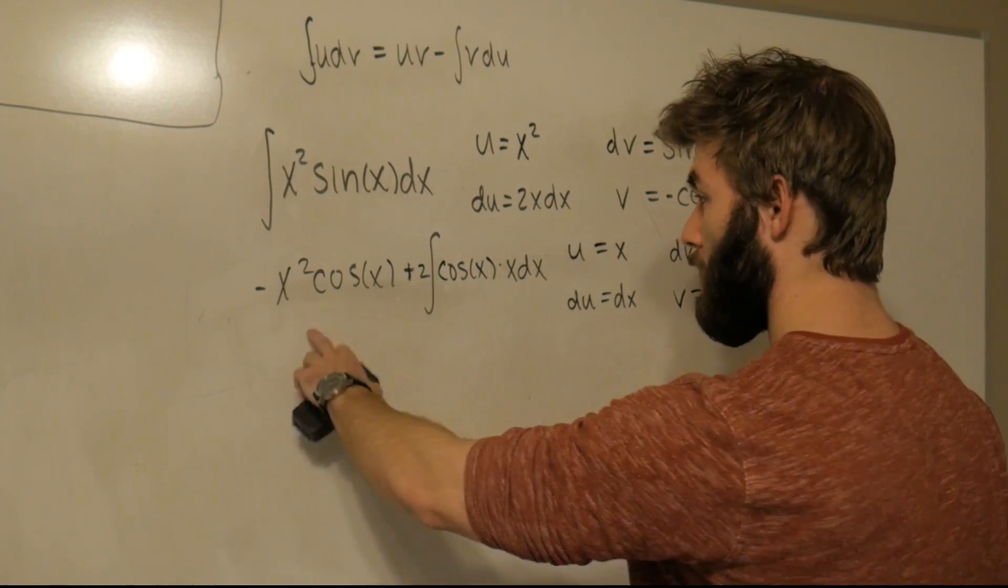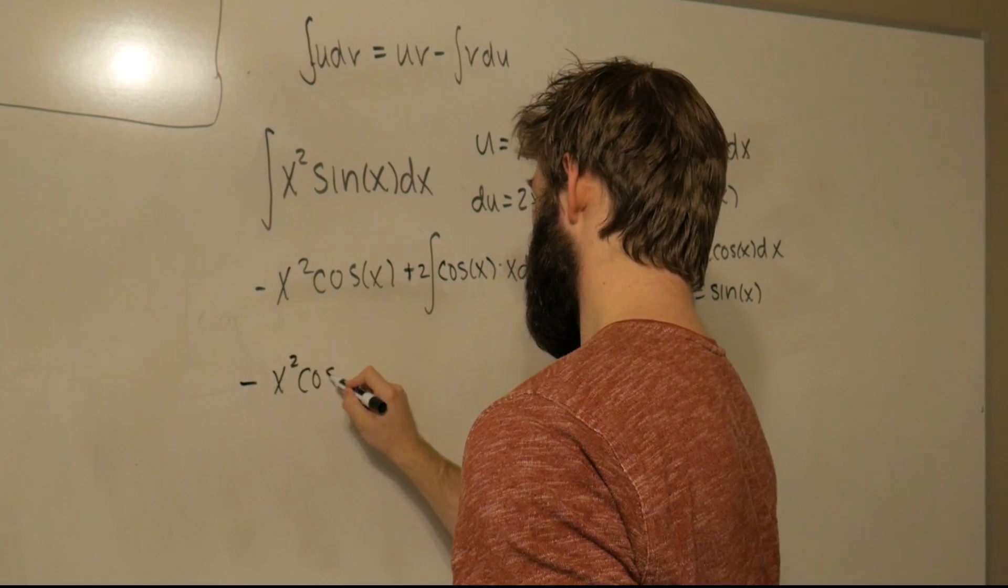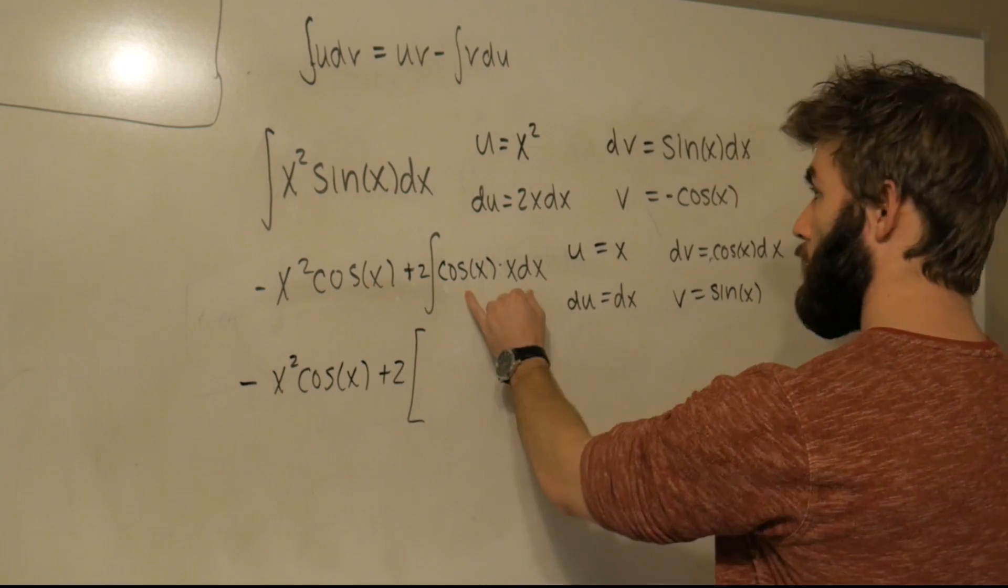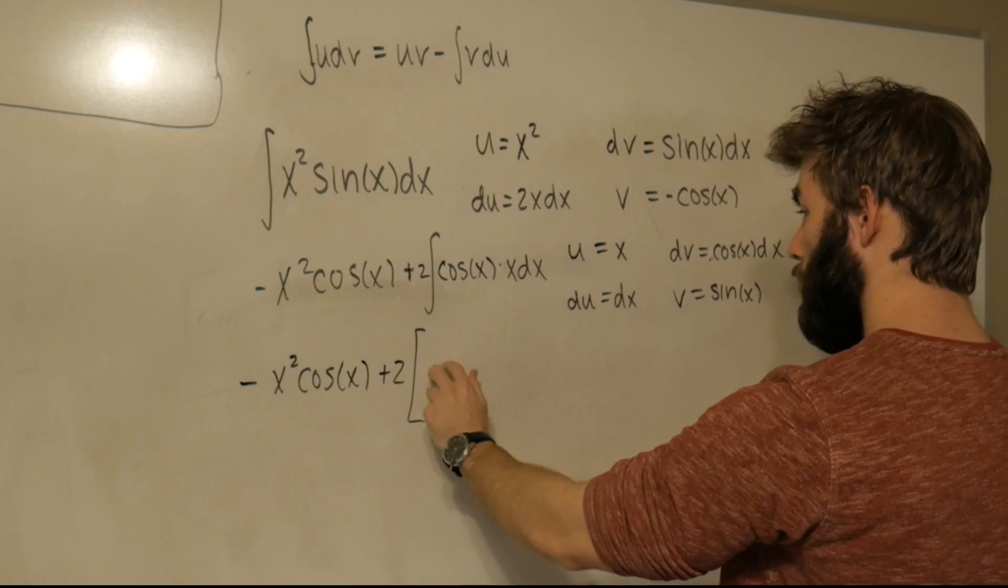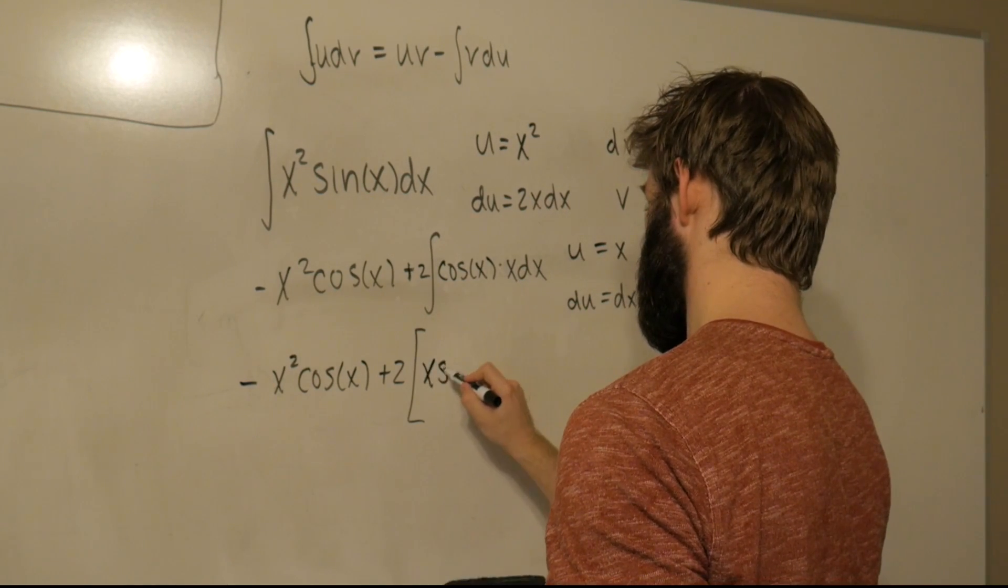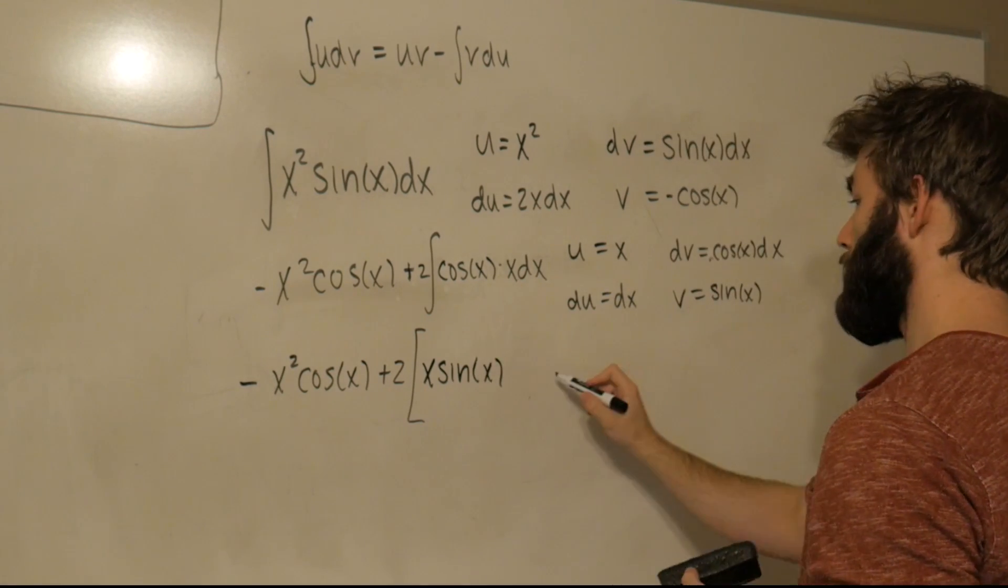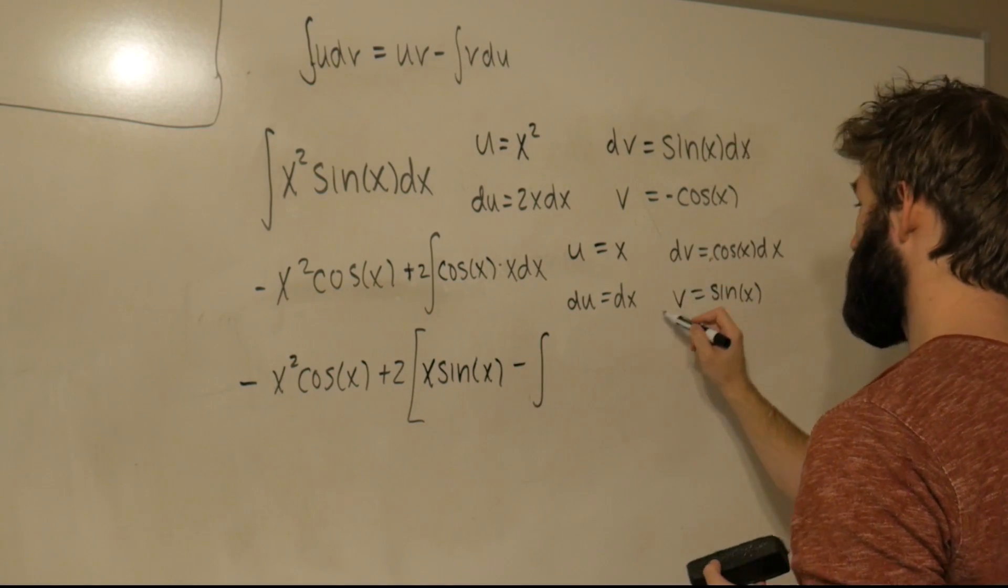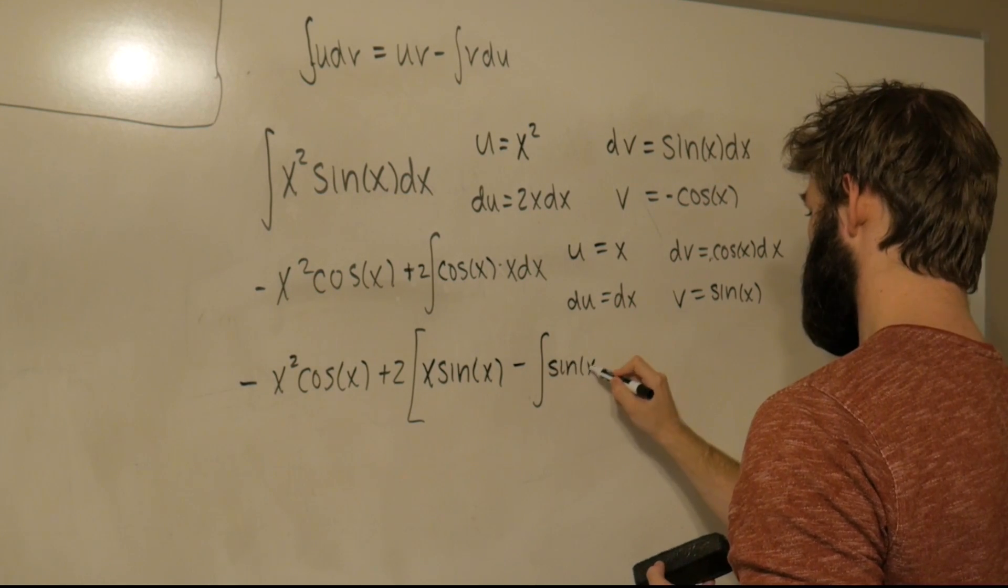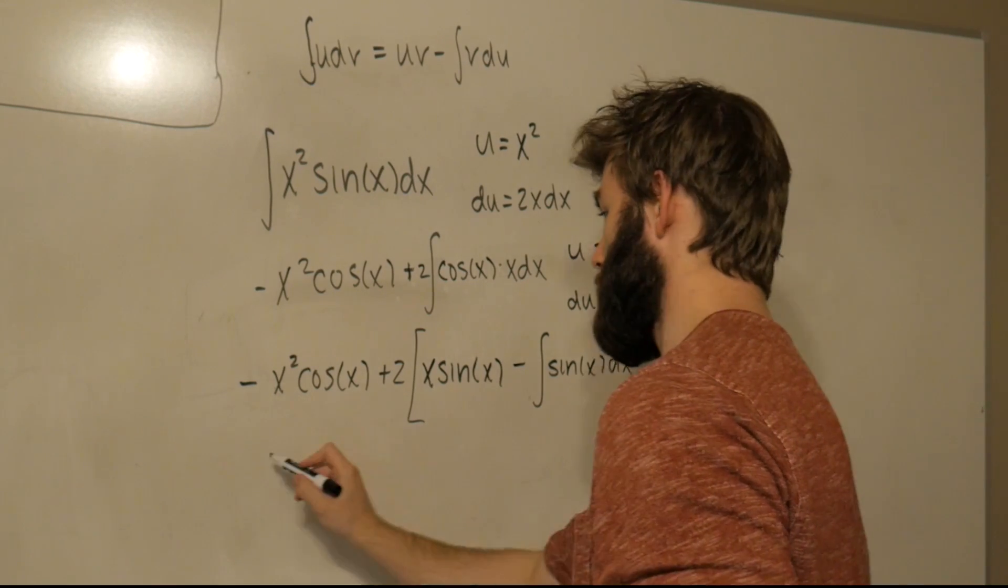Now we're just going to do the same thing for this integral. So once we write out, I'm just going to write out this term one more time. So this is going to come out to -x² cos(x) + 2... And then this is going to be uv - ∫v du. Well, uv is just going to be x sin(x) - ∫v du. So that's going to be ∫sin(x) dx.